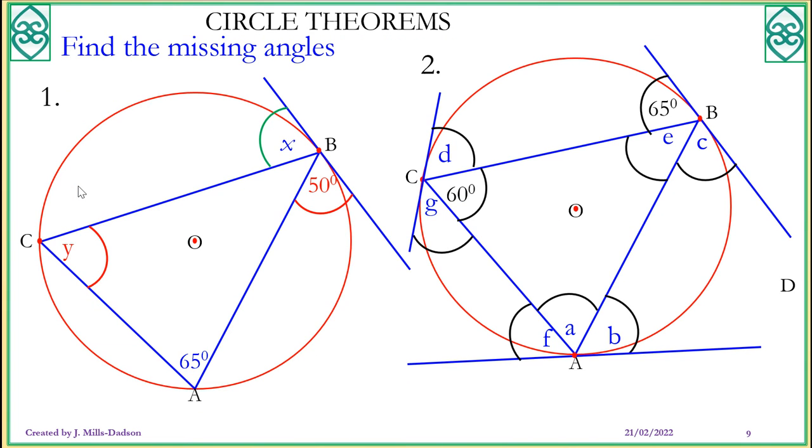Now pause the video and see if you can work out the missing angles. Let's check. This angle relates to X, so X is 65. The reason, alternate angles are equal. Y and 50 are also equal. Now here take your time. Let's go alphabetically. A is equal to 65. B relates to 65. C relates to 60 as well. Then we have D. D relates to 65. Then E, angles on a straight line make 180, so we can easily work out E as 55. And now we know 55, we can now work out F as 55 as well.